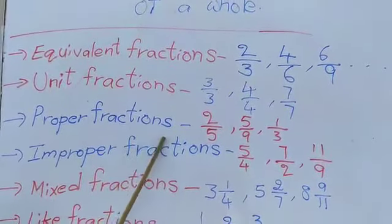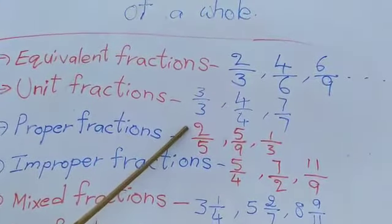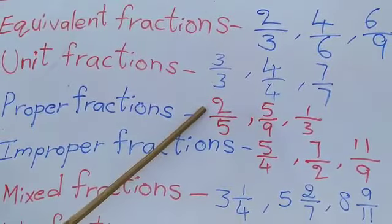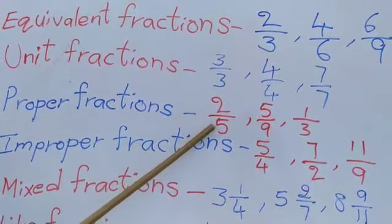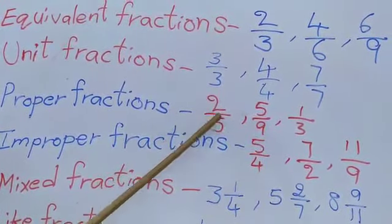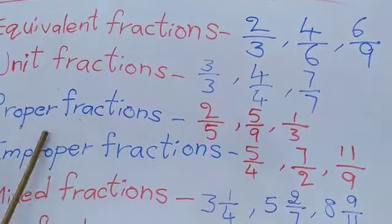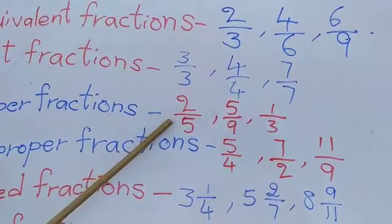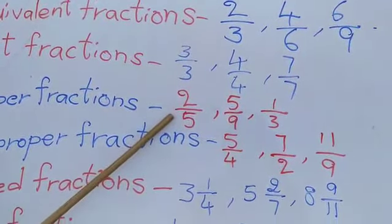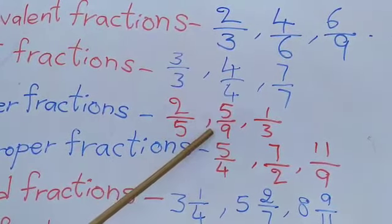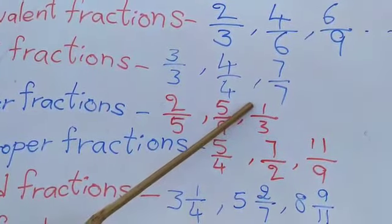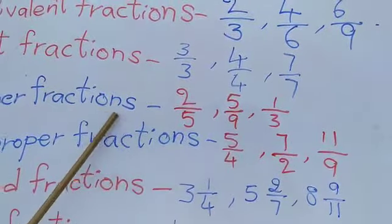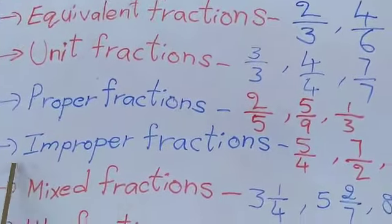Proper fractions: the numerator is smaller than the denominator. For example, 2 is less than 5, 5 is less than 9, 1 is less than 3. So this type of fractions are proper fractions.